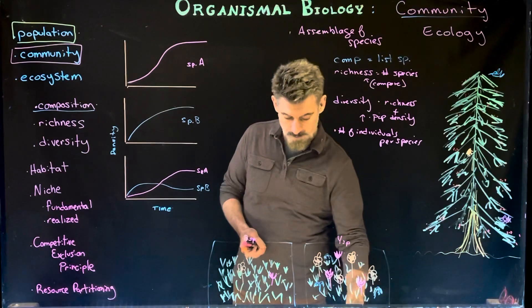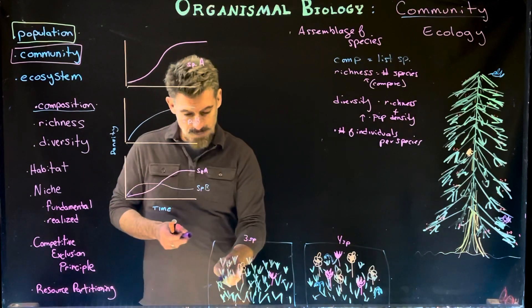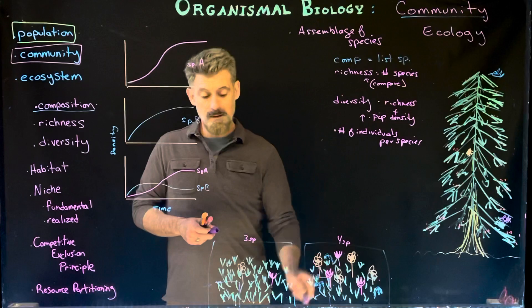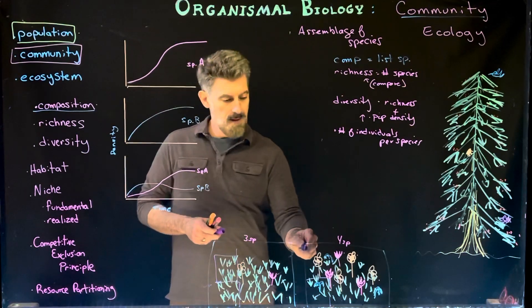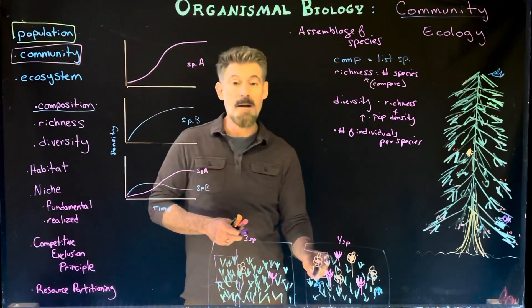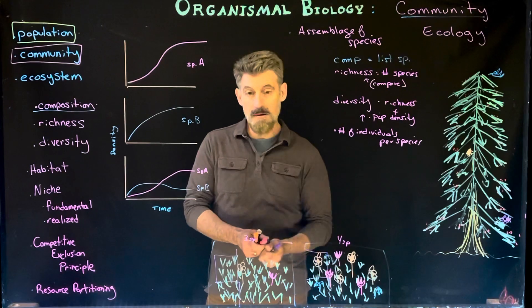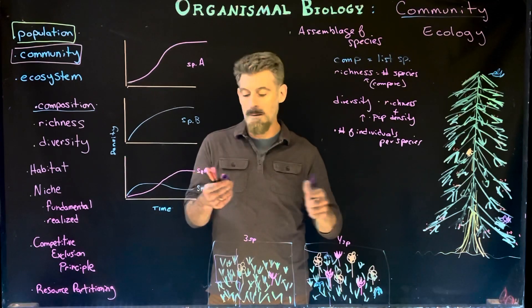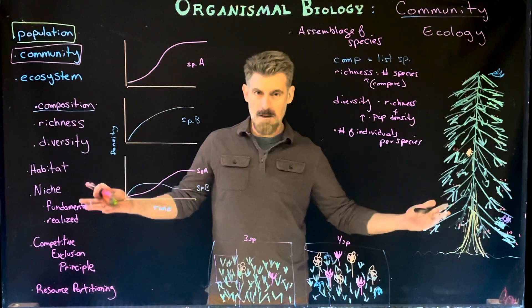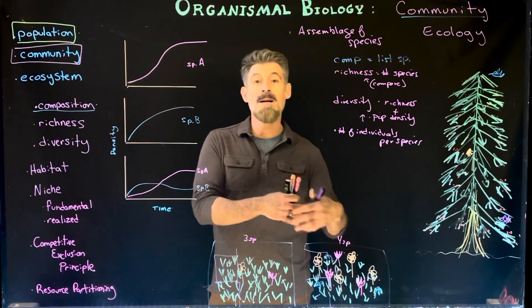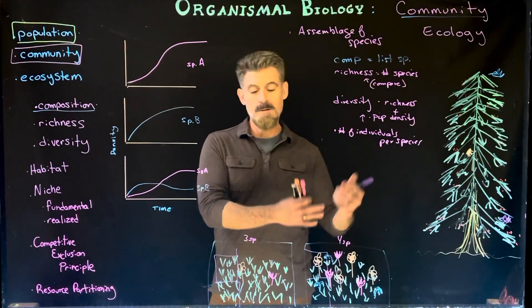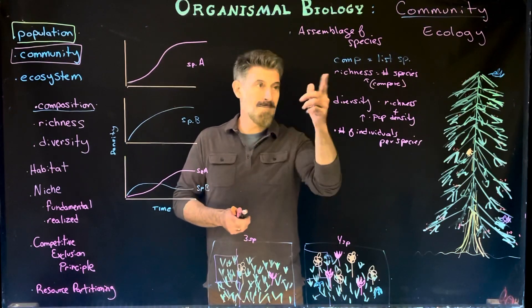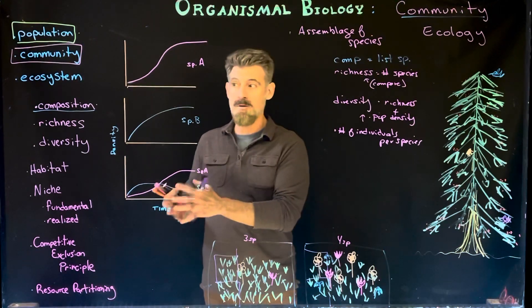Using quadrat sampling, if you sample a small area in the less diverse environment you might only find grass, but in the more diverse environment you'd find grass plus a blue flower or an orange flower. Sampling in a more diverse area will reveal more richness, whereas in a less diverse area some species might be missed entirely because their numbers are so low.